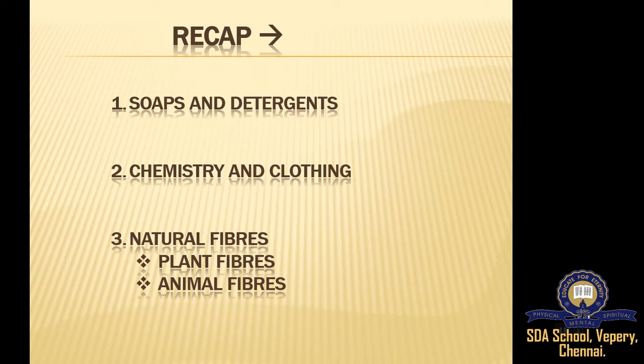We learned about the four types of silk: Eri, Muga, Tasar, and Mulberry. These are the four types of silk we covered in the last class.